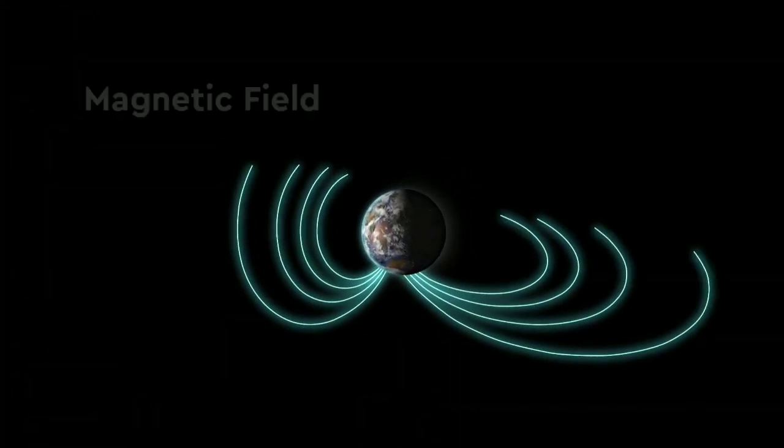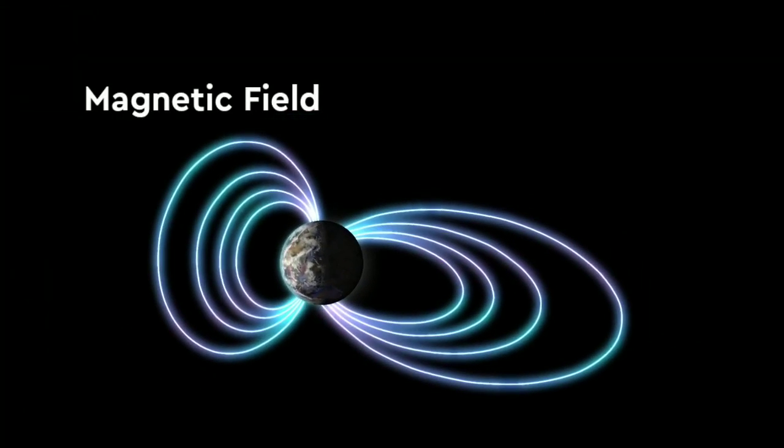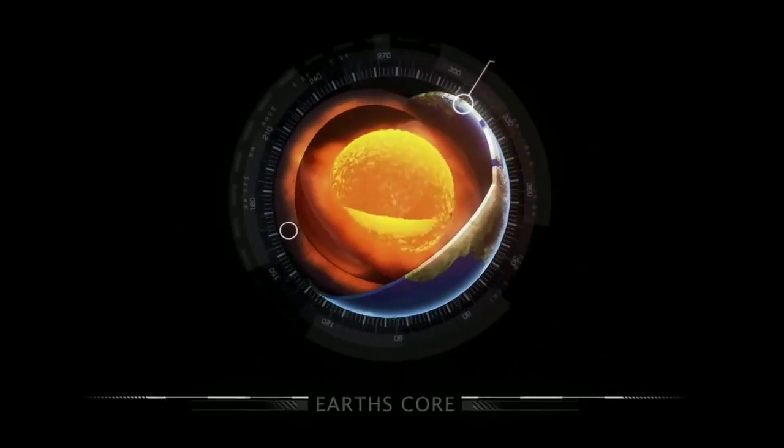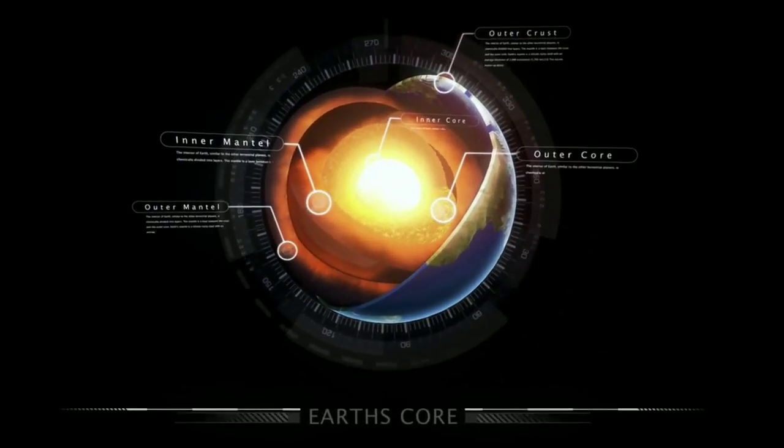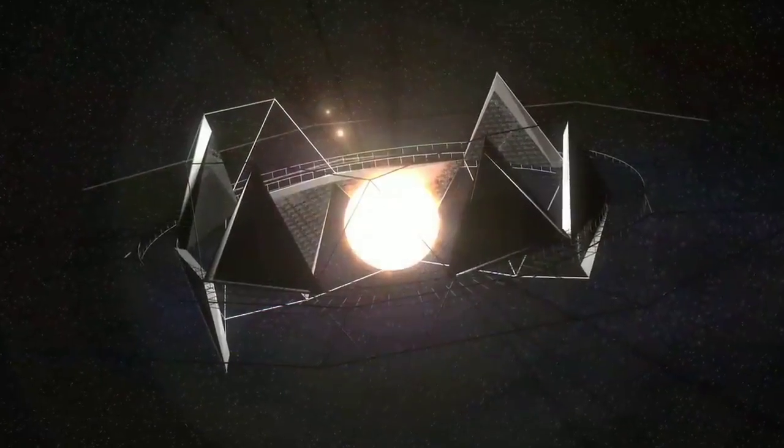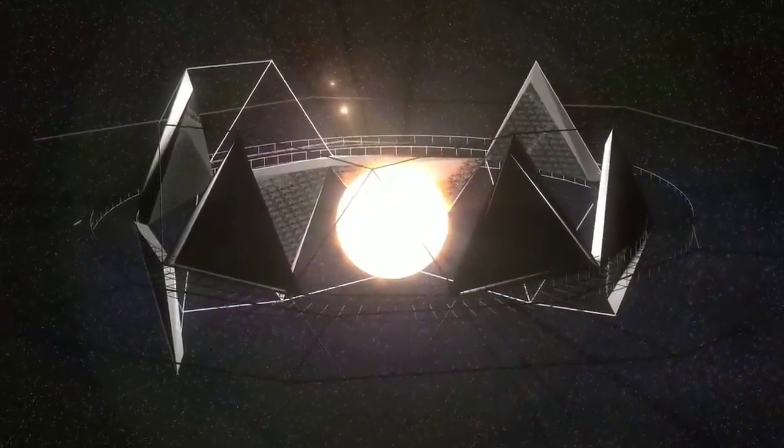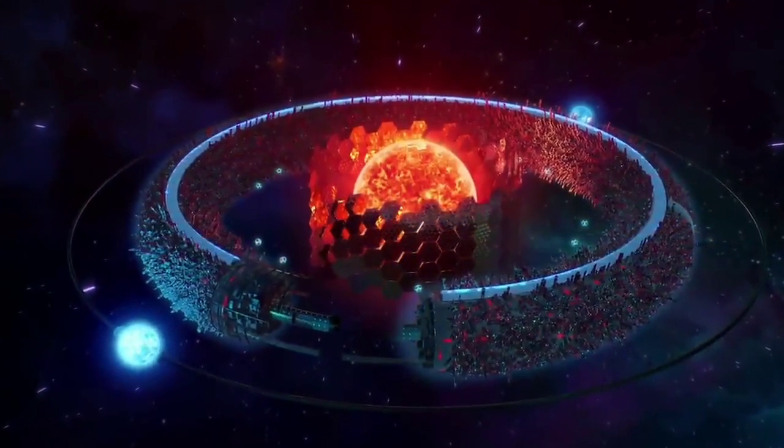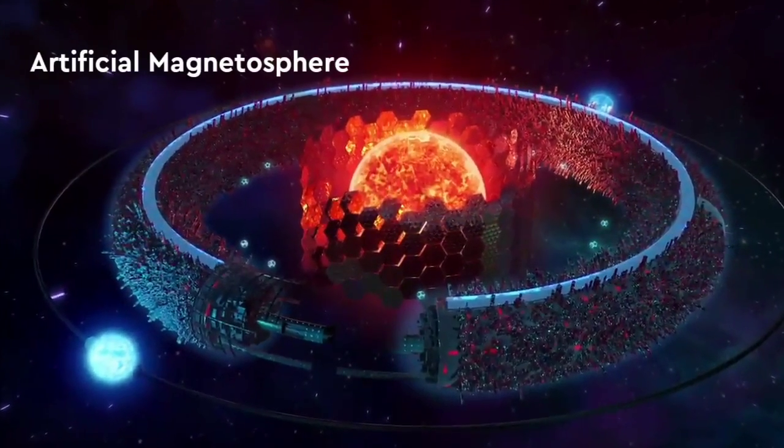To truly terraform Mars, we would need to fix its magnetic field. While we don't have the technologies to churn the core of a planet faster to revive its magnetic field, creative solutions abound. Maybe we could build a giant electromagnet in space to reflect away the solar wind. Maybe we could cuddle Mars with a superconductor, giving it an artificial magnetosphere.